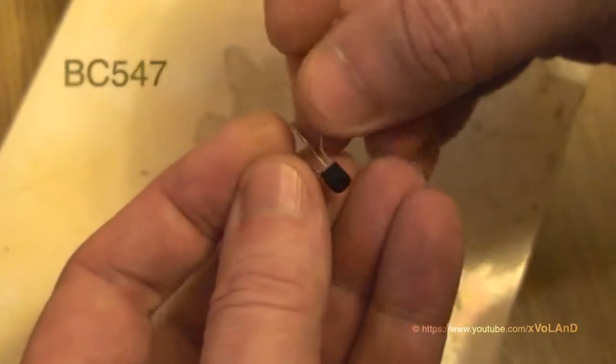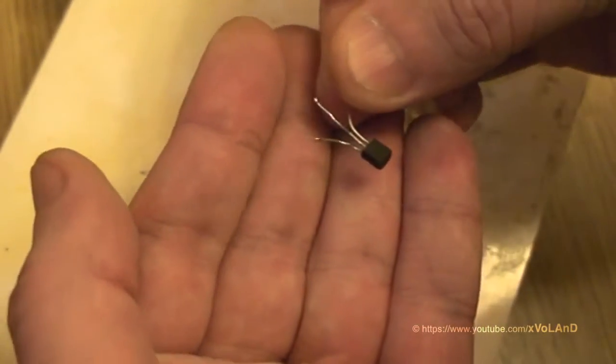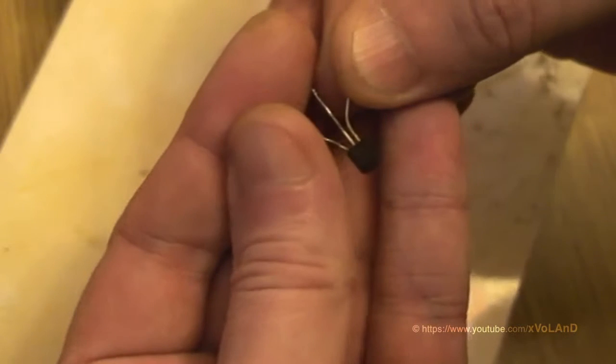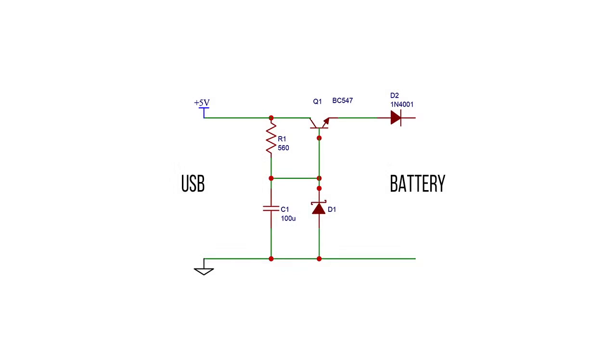I use only one transistor BC547. My solution is based on this circuit. This is a good solution for charging lithium-ion battery, but this solution is without controlling the charging process. Lithium-ion battery is explosive and requires protection board to protect from discharging and overcharging.